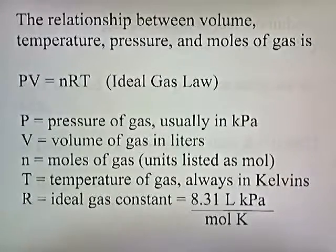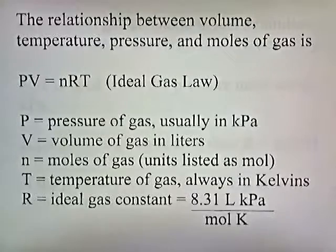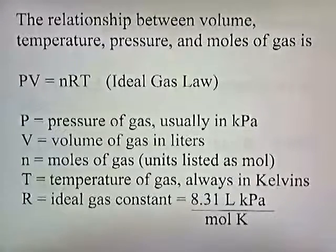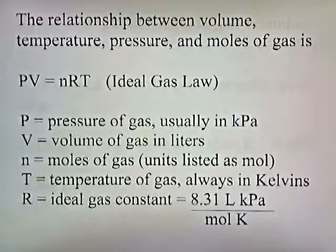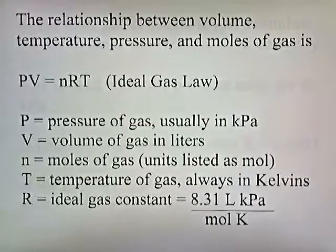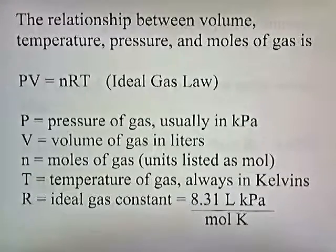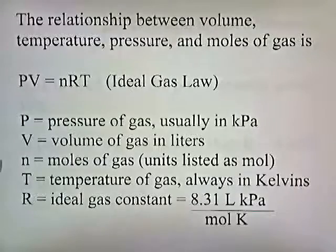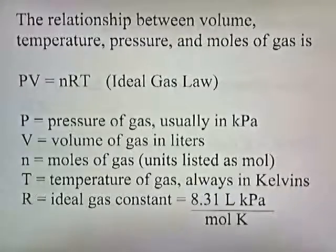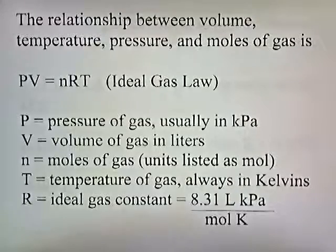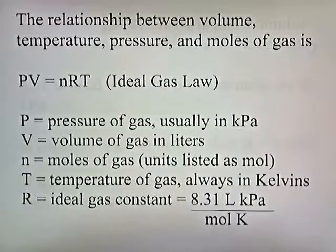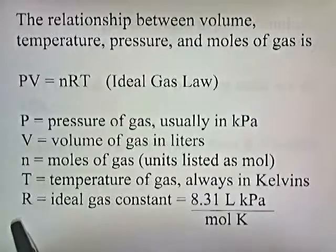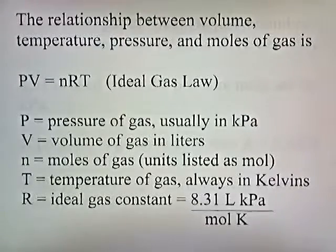The relationship between volume, temperature, pressure, and moles of gas is PV equals NRT. This is called the Ideal Gas Law. P is the pressure of the gas, usually in kilopascals. V is the volume of gas in liters. N is the moles of gas. T is the temperature of the gas, always in kelvins. And R is the ideal gas constant, R is just a number we're going to use, 8.31.